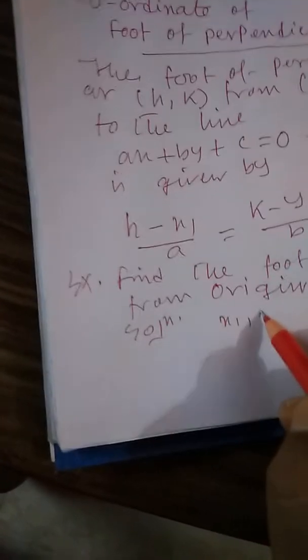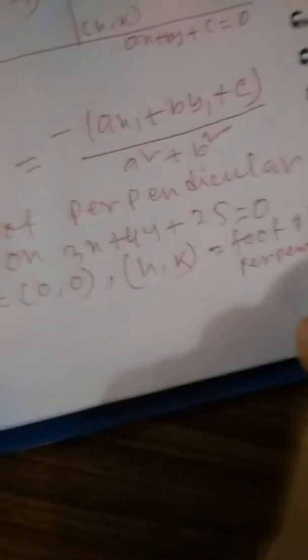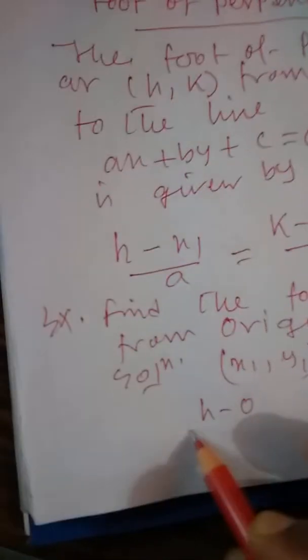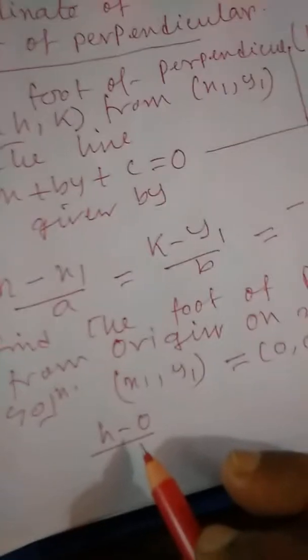So how to find this foot of perpendicular? Easily you can find. Here (X₁, Y₁) = (0, 0). Let (H, K) be the foot of perpendicular. Just putting X₁ = 0 and Y₁ = 0. Comparing 3X + 4Y + 25 = 0 with AX + BY + C = 0, we get A = 3, B = 4, and C = 25. So: (H − 0) / 3 = (K − 0) / 4 = −(0 + 0 + 25) / (3² + 4²).